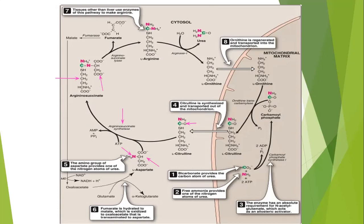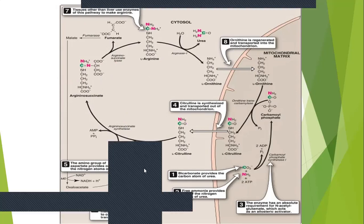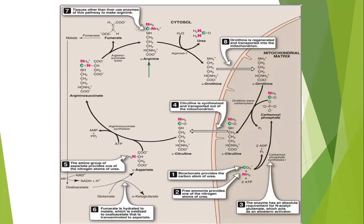In the next reaction, argininosuccinate is cleaved by argininosuccinate lyase to form arginine and fumarate. Fumarate is a TCA cycle intermediate. The cleavage produces arginine from one part of the molecule and fumarate from the other part.